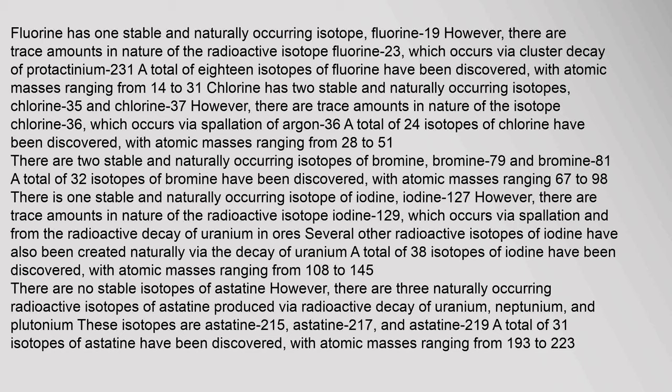There are two stable and naturally occurring isotopes of bromine: bromine-79 and bromine-81. A total of 32 isotopes of bromine have been discovered, with atomic masses ranging from 67 to 98. There is one stable and naturally occurring isotope of iodine, iodine-127. However, there are trace amounts of the radioactive isotope iodine-129, which occurs via spallation and from the radioactive decay of uranium. A total of 38 isotopes of iodine have been discovered, with atomic masses ranging from 108 to 145. There are no stable isotopes of astatine. Three naturally occurring radioactive isotopes of astatine are produced via radioactive decay of uranium, neptunium, and plutonium: astatine-215, astatine-217, and astatine-219. A total of 31 isotopes of astatine have been discovered, with atomic masses ranging from 193 to 223.